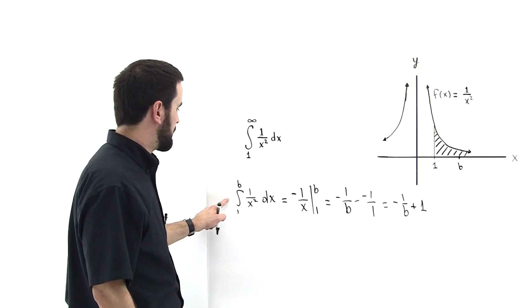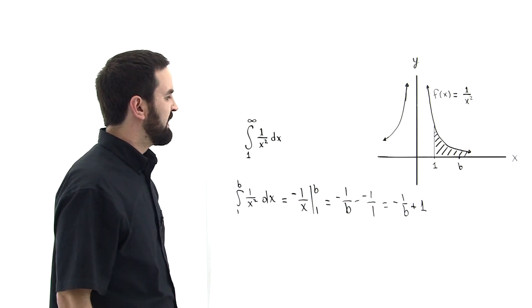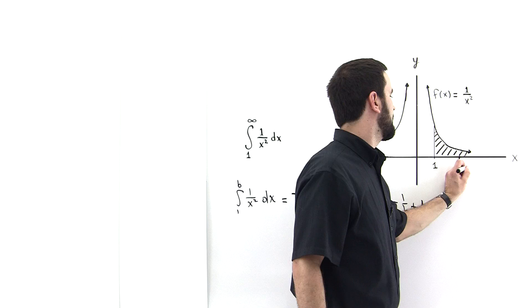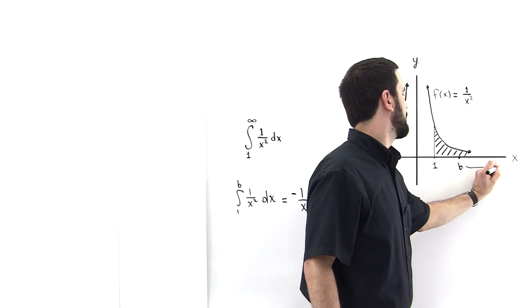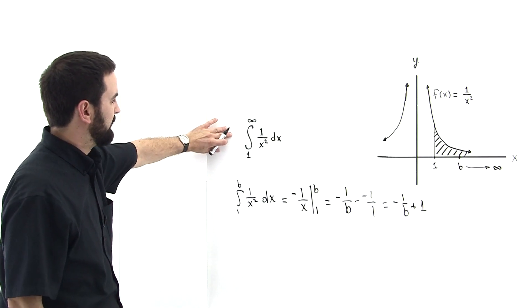So that's what this integral reduces to when the limit is b. Now let's let this b go to infinity, and then that will be equal to this.